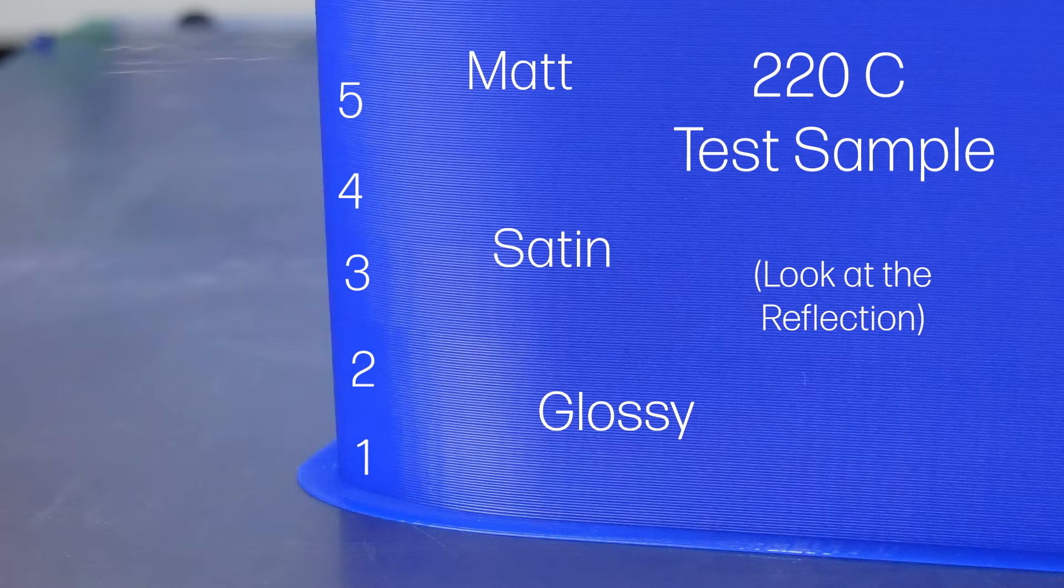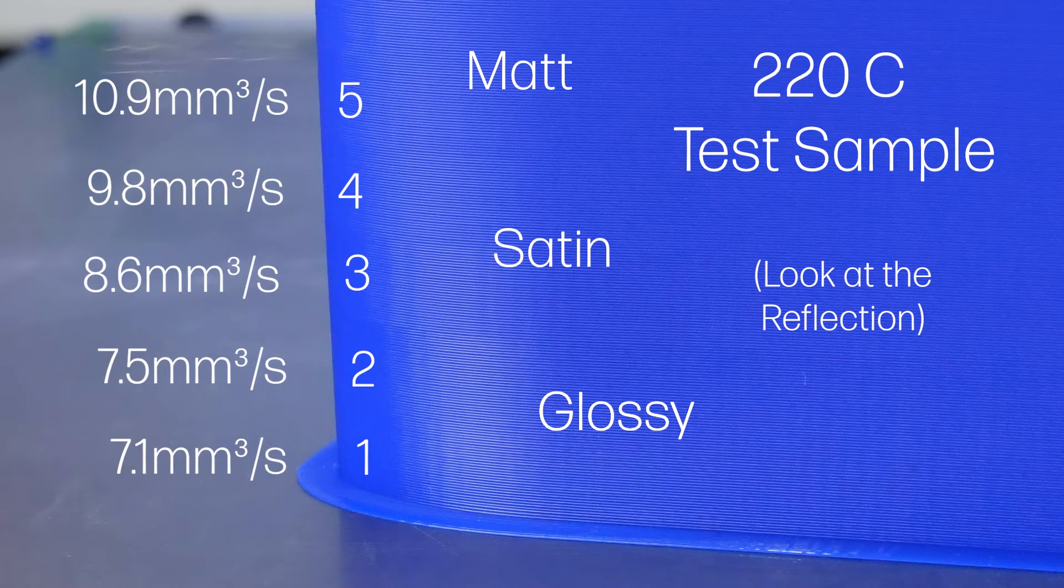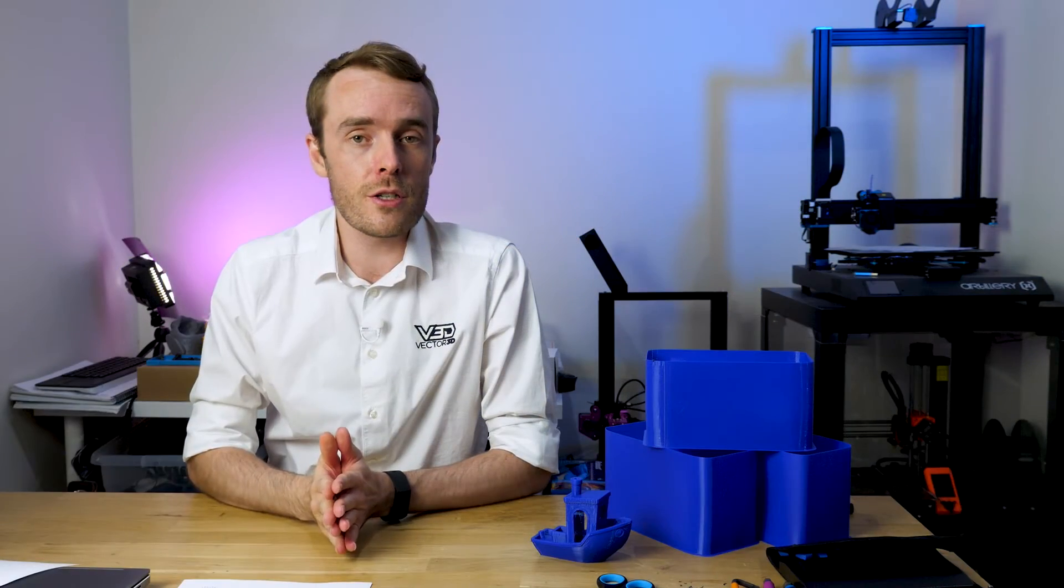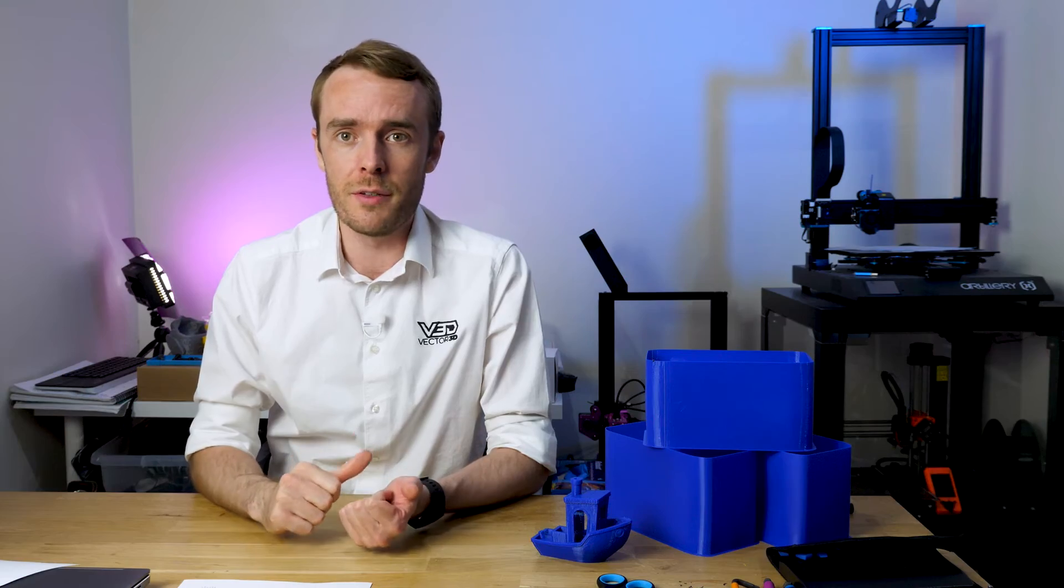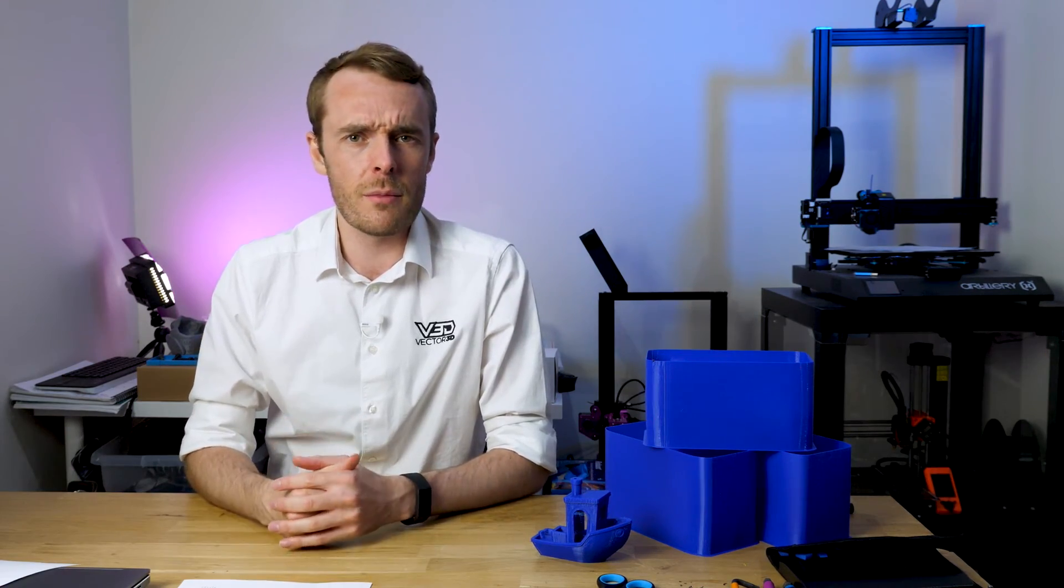On the assumption that gloss is good and matte is bad, the first three speeds were optimal at 220 degrees celsius, which actually only takes us up to 8.6 millimeters cubed per second. That's over 2 millimeters cubed per second slower than we predicted for the maximum flow rate in the previous video. So maybe there's something going on there.